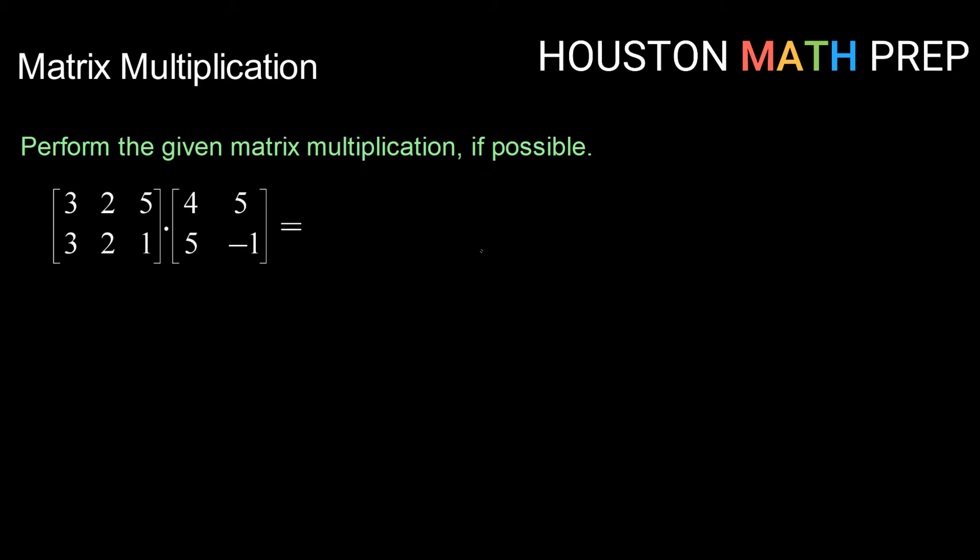Perform the multiplication if possible. So as always, we start by checking out the dimensions. Our dimensions for our first matrix, we have 2 rows by 3 columns, 2 by 3. Here we have 2 rows by 2 columns. In order for matrix multiplication to be possible, we check on these two inner dimensions and make sure that they match. Here, they do not. 3 and 2 do not match, which means that this matrix multiplication is not possible.